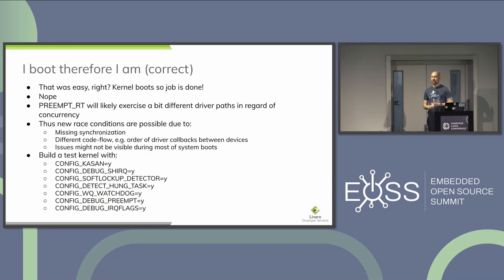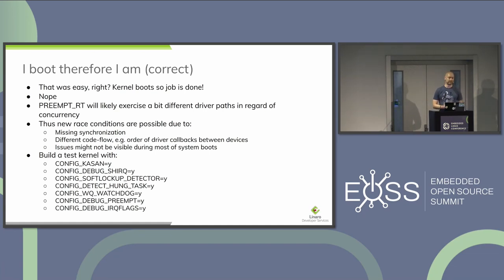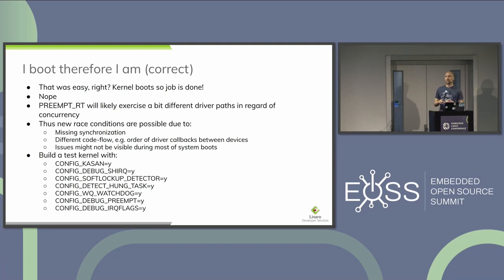So we have the kernel patched and built with PREEMPT_RT. The job might seem done, but the kernel built with PREEMPT_RT will exercise different code paths. If no one has ever tried your drivers with a PREEMPT_RT kernel, you might be the first to hit issues — typically race conditions from missing synchronization, different callback ordering, or more probe deferrals. Most likely, the problems already exist in the Linux kernel; PREEMPT_RT just brings them to light.